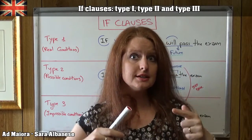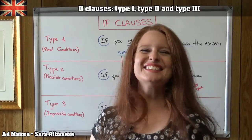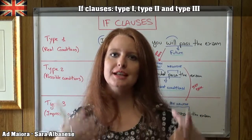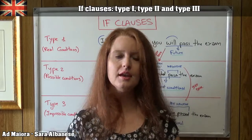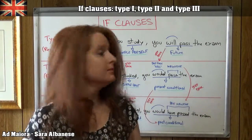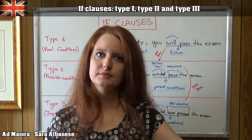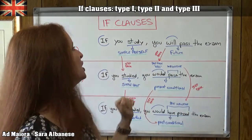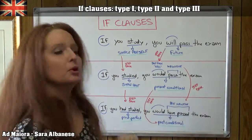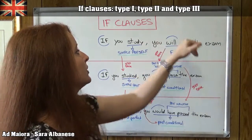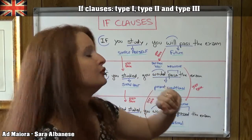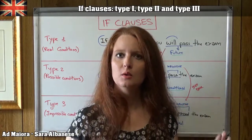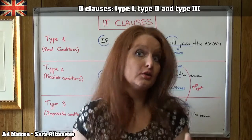When we understand the mechanism we have to follow, we won't make mistakes anymore. Type 1 covers real conditions — something that can really happen in life. For example: 'If you study, you will pass the exam.' We have the IF clause with a simple present — 'if you study' — and then the main clause with a future tense using WILL. We can't change these tenses; this is the only correct way to express the sentence.